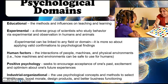Experimental — a diverse group of scientists who study behavior via experimentation and observation, both human and animal. If you have time, check out '100 Humans' on Netflix. It's experimental psychology, it's highly entertaining, and it applies to a lot of the theories we've studied. It's a docu-series with about 30-minute episodes — super entertaining.